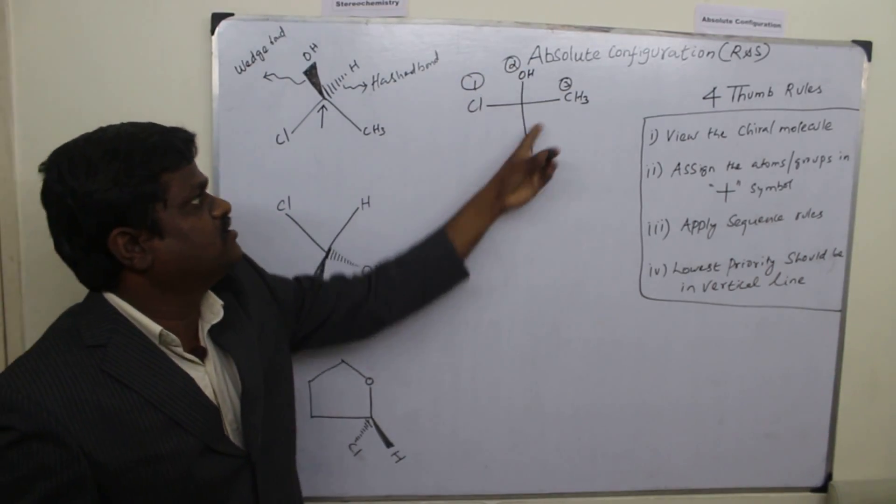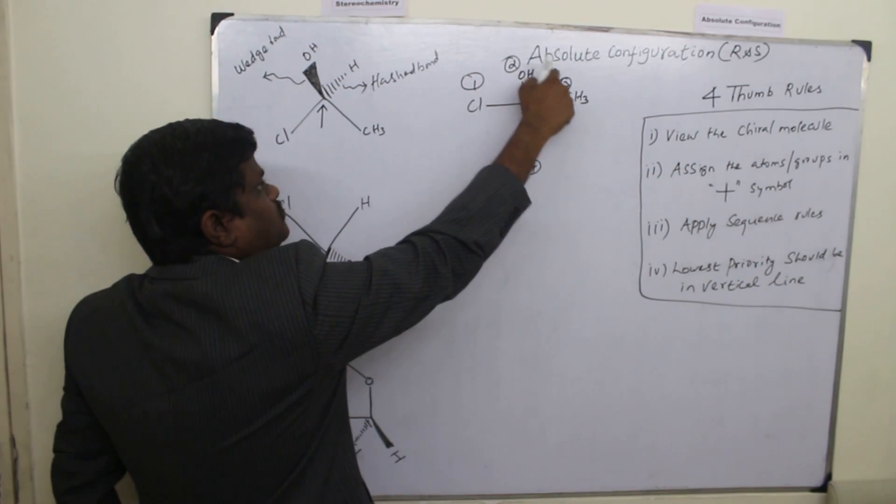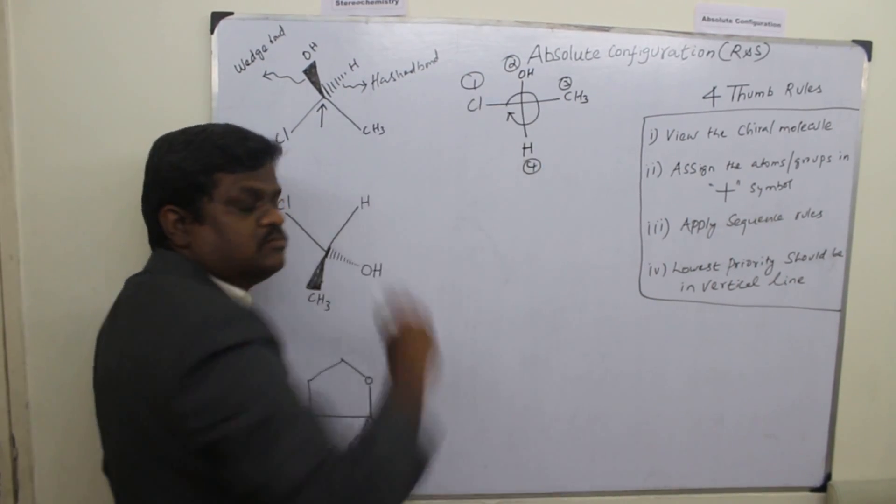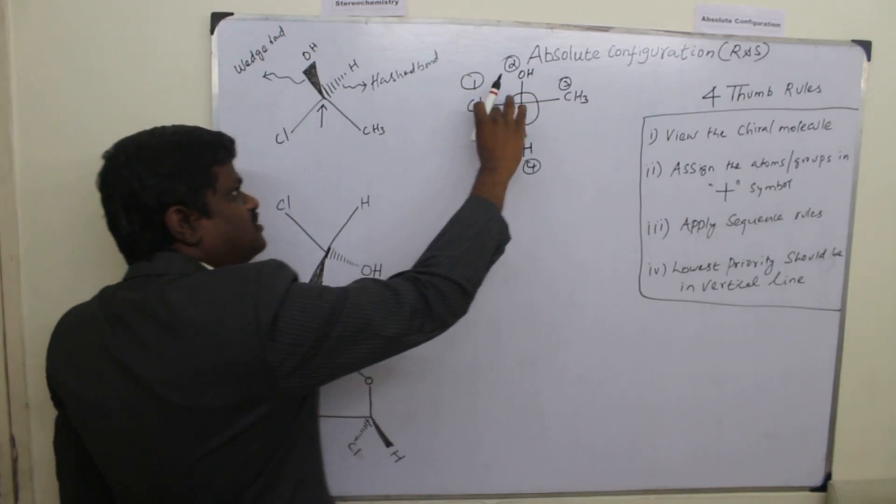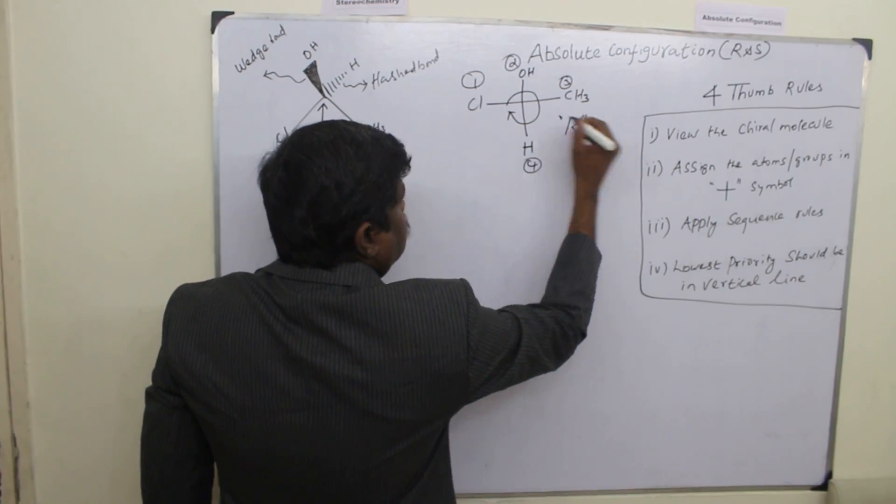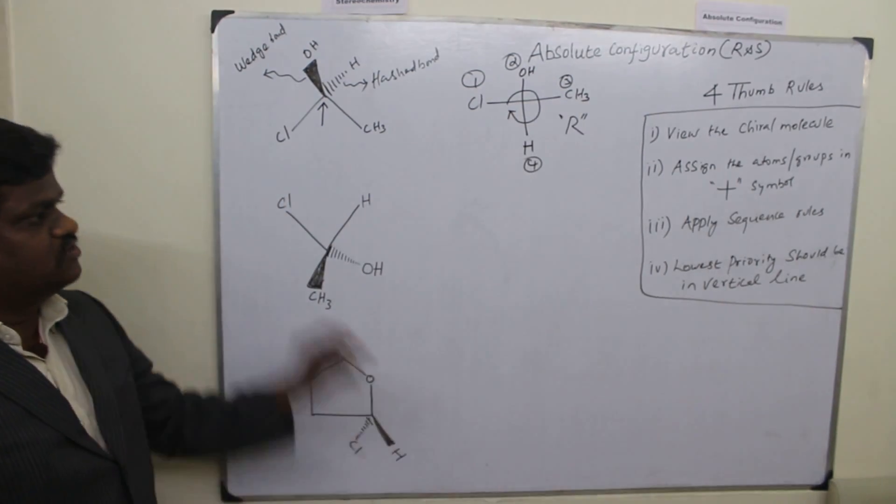Now we have to rotate in this way. So one always connected to two, then followed by three like this. So it is revolving like this. So this is clockwise direction. Then it is R configuration. That's all.